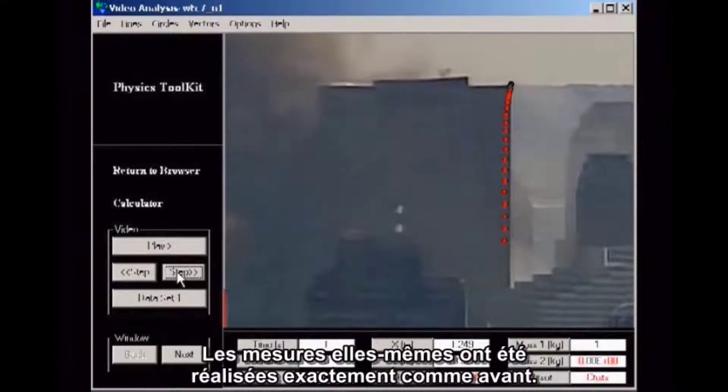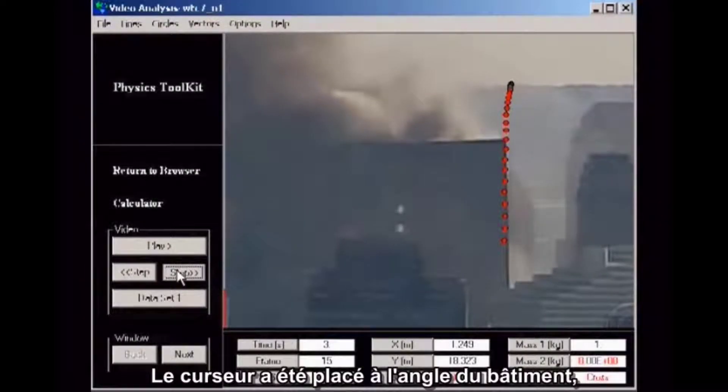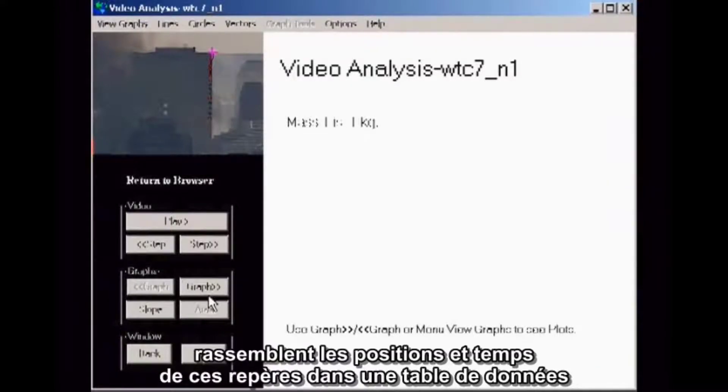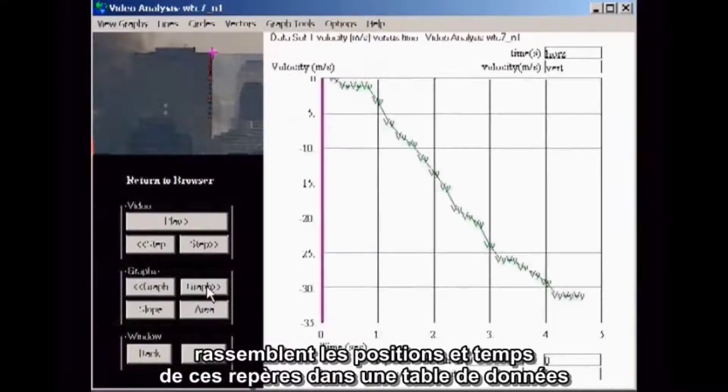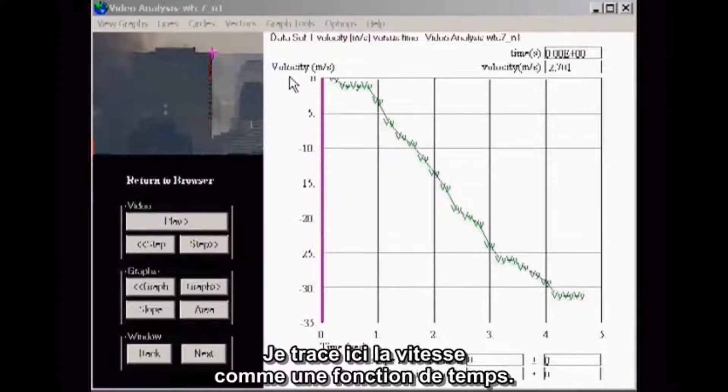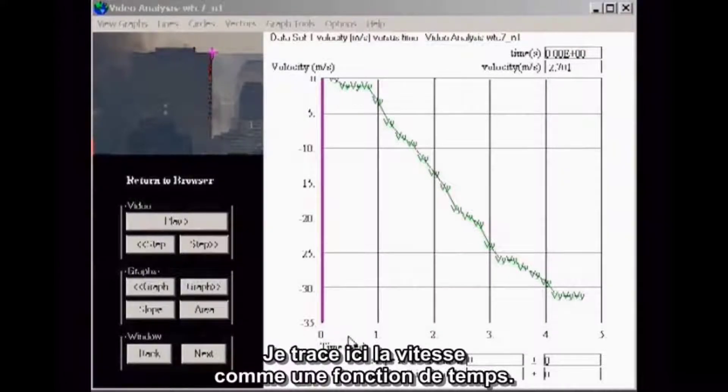The actual measurements were done exactly as before. The cursor was placed on the corner of the building, and marks were placed frame by frame. The built-in functions of the Physics Toolkit software capture the positions and times of these marks in a data table, from which it computes and displays various kinds of graphs. I'm here plotting velocity as a function of time. The slope of this kind of graph gives the acceleration.